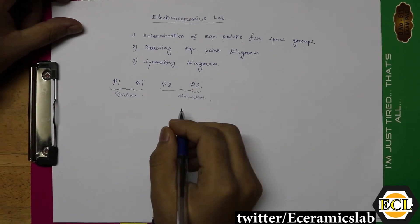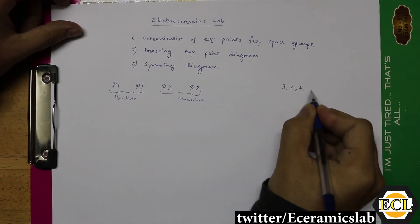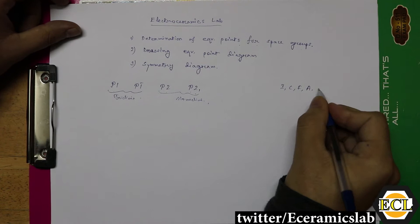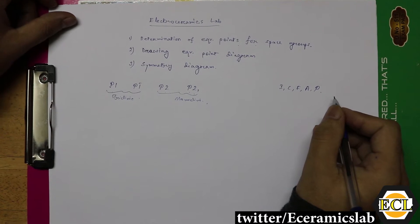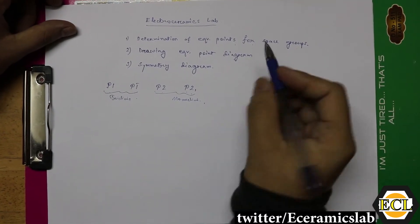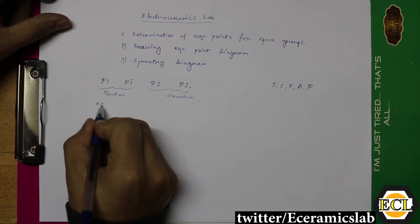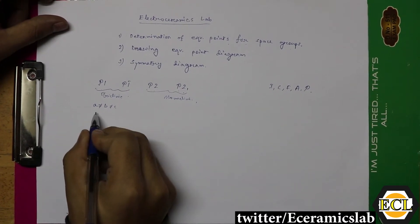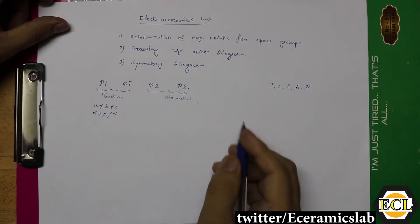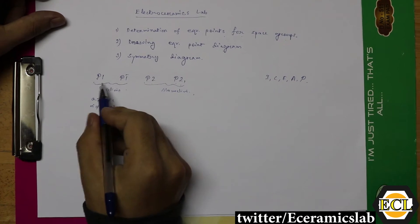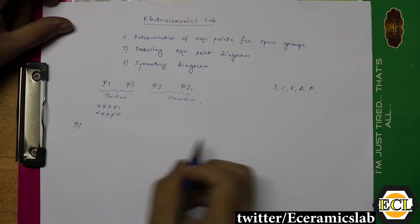P indicates primitive. Other systems are body-centered, C-centered, face-centered, and A-centered. In a primitive lattice, the total number of lattice points in the unit cell is one. The lattice parameters are: a ≠ b ≠ c, and angles alpha ≠ beta ≠ gamma. First, we will discuss the P1 space group.